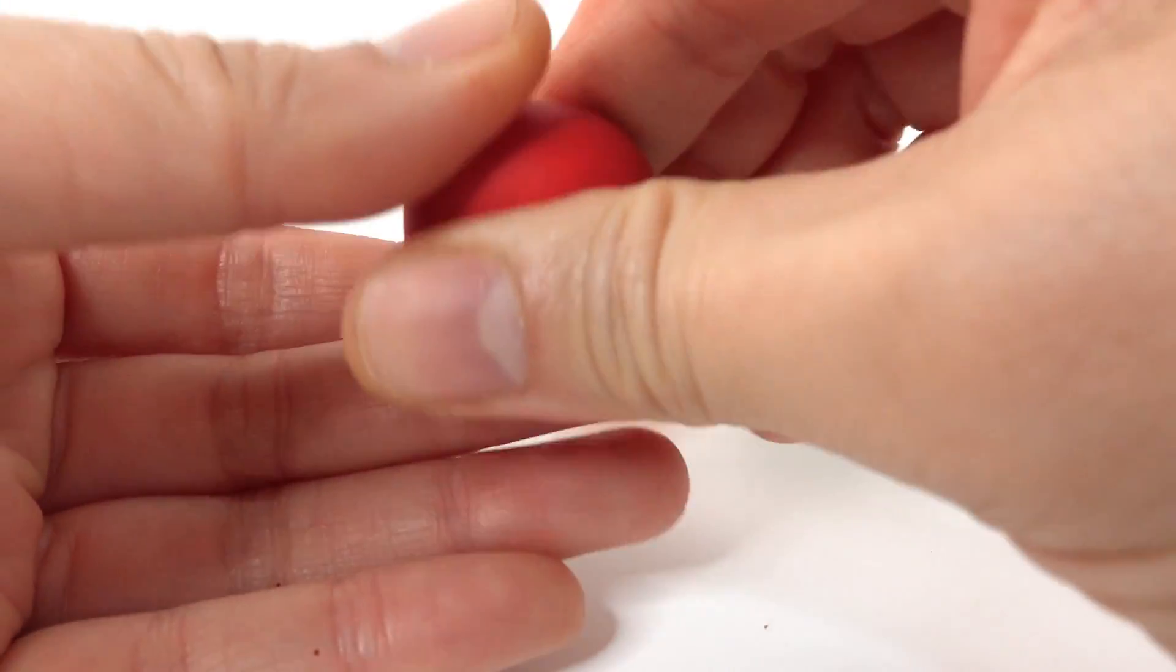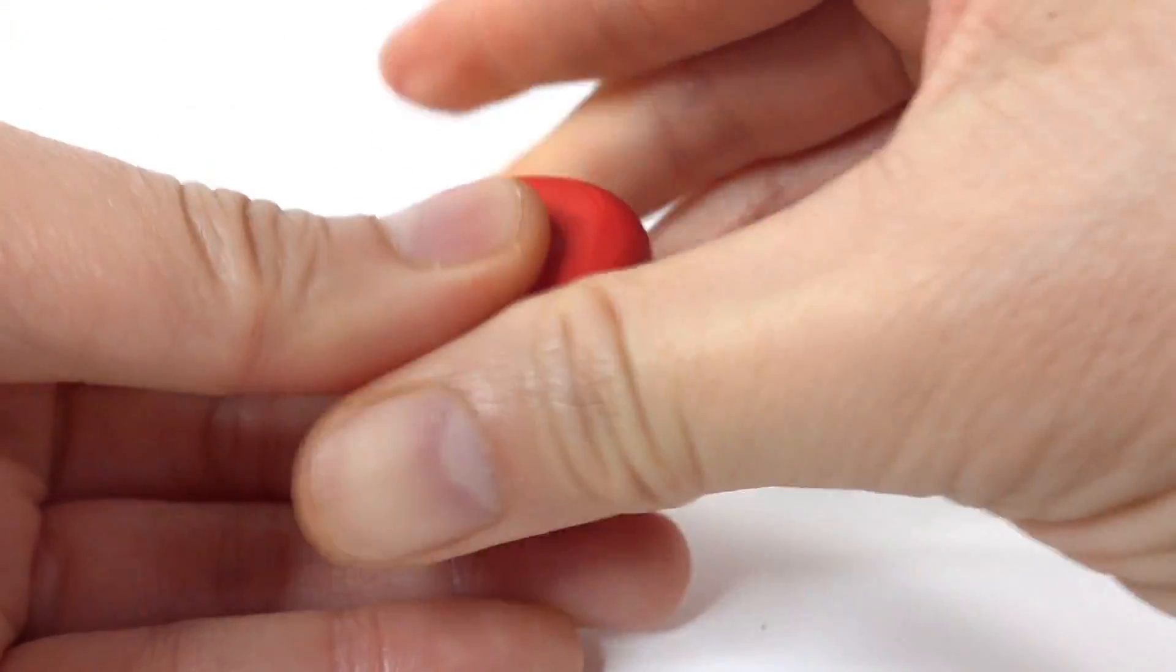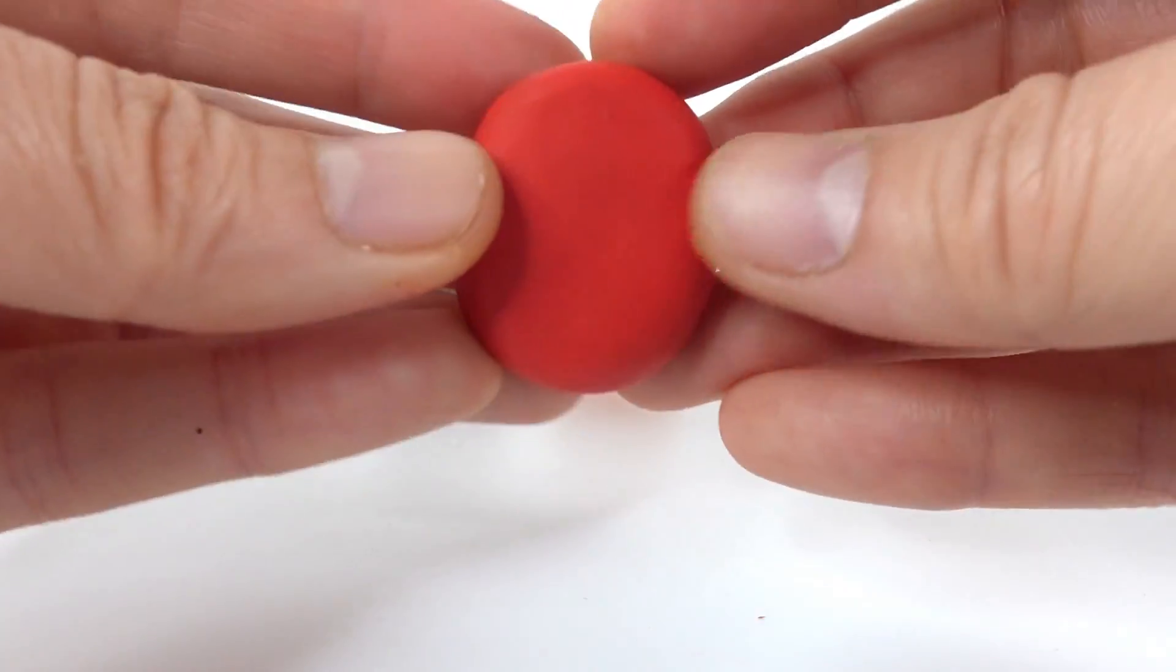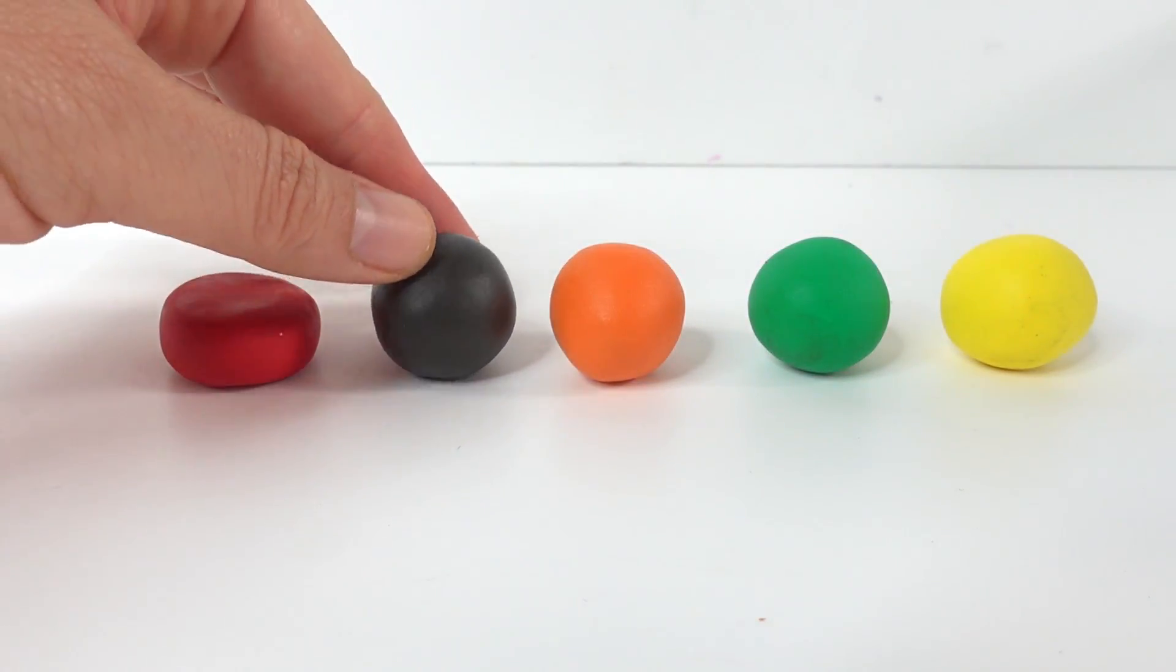So the first thing we want to do is take our little ball of clay and start to shape it into an oval. And here is our first one, our red one. Let's go ahead and do this for the rest of them.